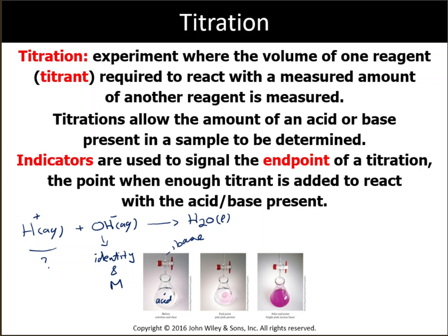At some point, when enough hydroxide has been added, all the hydrogen ions will be neutralized and all you will have in the flask is water. That's the end point. The end point of any titration reaction is when the number of moles of acid equals the number of moles of base. That's when we stop, because we know exactly how much base was used to neutralize the acid.